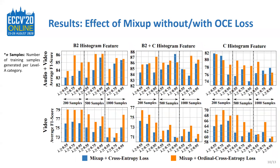In this slide, we show the benefit of using mix-up augmentation without and with the ordinal cross-entropy loss function. We calculate the average weighted F1 score performance under different threshold values and under different numbers of samples generated for each class using mix-up augmentation. We observe that for most cases, mix-up augmentation and the ordinal cross-entropy loss function complement each other, thereby helping us improve the overall performance.